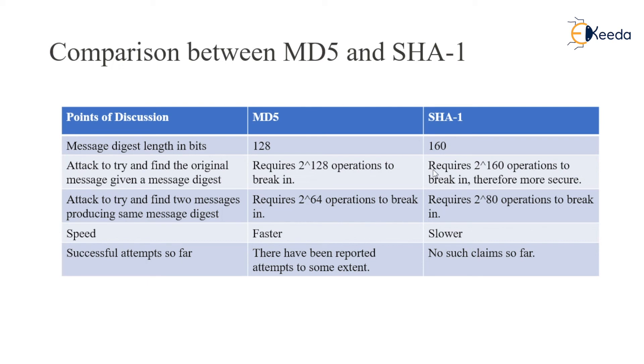SHA is considered more secure than MD5. Attack to find two messages producing the same message digest requires 2^64 operations for MD5 and 2^80 operations for SHA, because it has 80 rounds in the four steps.